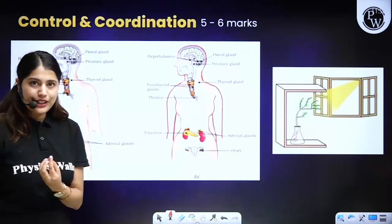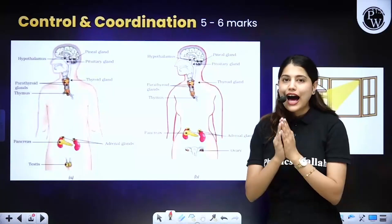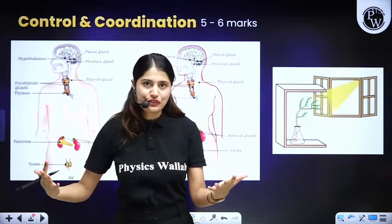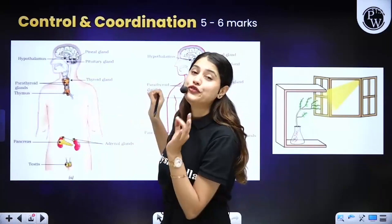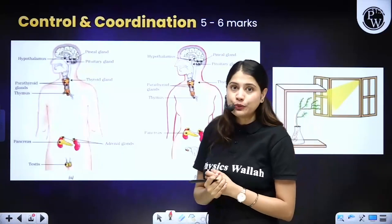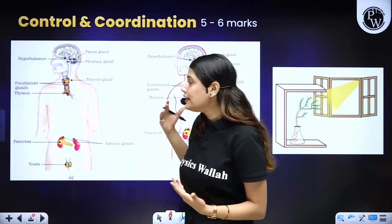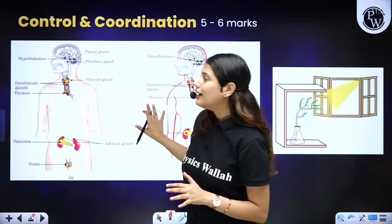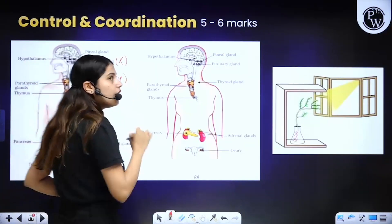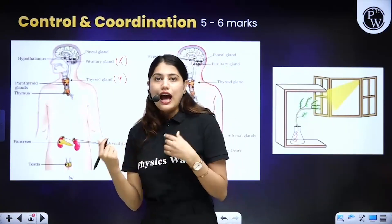The next chapter is Control and Coordination, which is worth about 5 to 6 marks. One very important topic is the neuron — the diagram and its different parts. Another very, very important topic is the different types of endocrine glands in the human body, not only the different types but also their functions. In board exams they can give you a diagram and ask what is labelled part X or Y and to write down their functions.